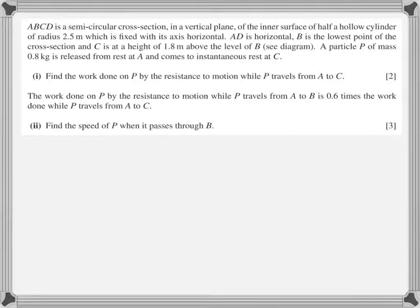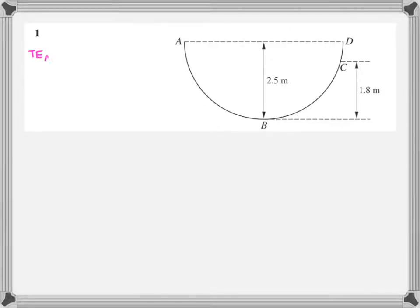Part one: find the work done on P by the resistance to motion while P travels from A to C. Part two: the work done on P by the resistance while P travels from A to B is 0.6 times the work done while P travels from A to C, because the distance AC is much bigger compared to AB. Therefore the work done from A to B is 0.6 times the answer of part one. Find the speed of P when it passes through B.